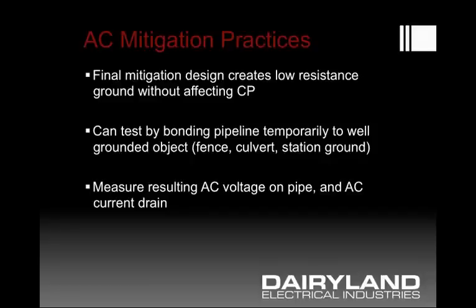The AC mitigation grounding system would be the system that is a low resistance ground. Ideally, you'd have that installed where it does not affect CP — that's where the decoupler comes in. One can test to determine what these effects will be: if one was to bond temporarily and safely to an existing grounded object — it could be a culvert, a road casing, or a fence — something representing a low resistance ground, you would see the induced AC get collapsed to some degree. You can also measure the resulting voltage and use a clamp-on AC ammeter to determine what AC current is available through the coupled source.